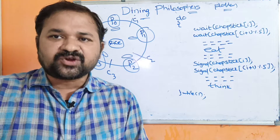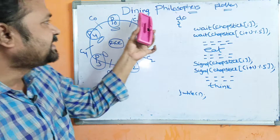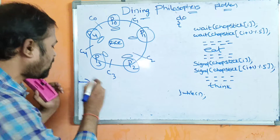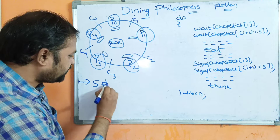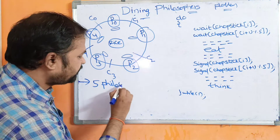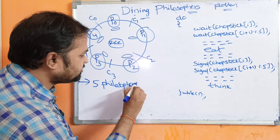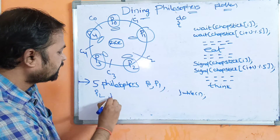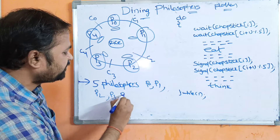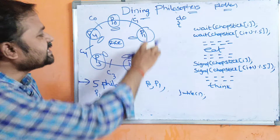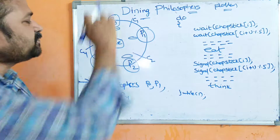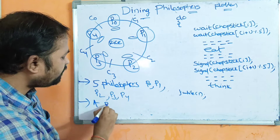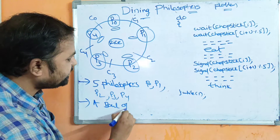In this video, we are going to discuss the dining philosophers problem. Assume five philosophers P0, P1, P2, P3, and P4 who are sitting around a circular dining table. A bowl of rice is in the center of the table.